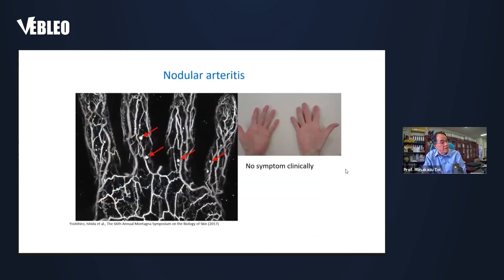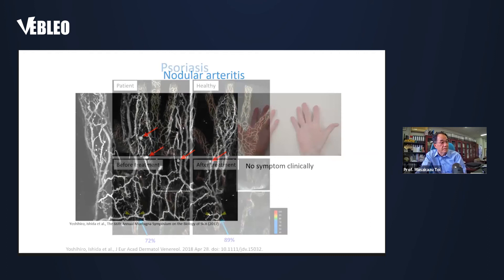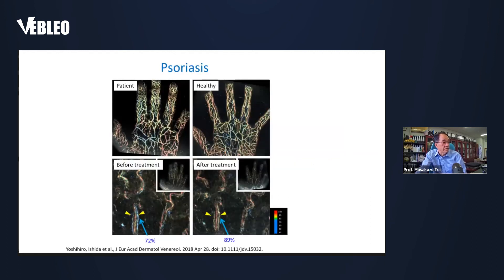Back to the palmar arteries — this is not a normal case. This is an example of nodular arthritis. Nodules of arteries were identified by PAI, but the patient didn't have any clinical symptoms. This is a disease case of psoriasis. Before and after treatment, after treatment the oxygen concentration S-factor was improved. That's clear evidence that this system is able to be used for monitoring of disease.